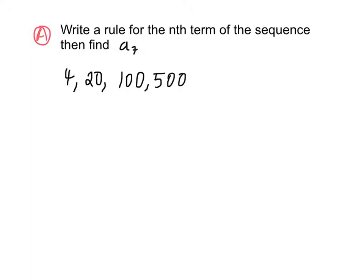So a problem will ask us to write a rule for the nth term of the sequence and then find a sub 7. So once again, we need to identify what a sub 1 is. This is 4 in this problem. Next, we need to find the ratio. So we take a sub 2 and divide it by a sub 1. So 20 over 4 equals 5. This is our common ratio, or the number that we're multiplying or dividing by between each of these numbers.